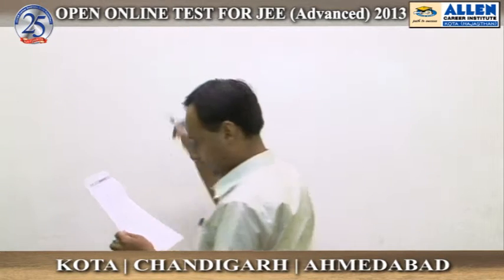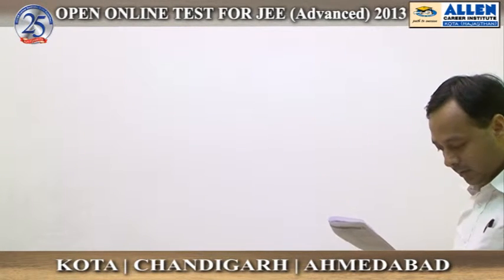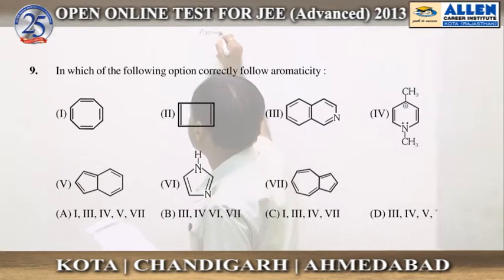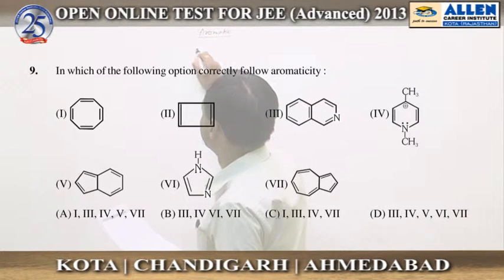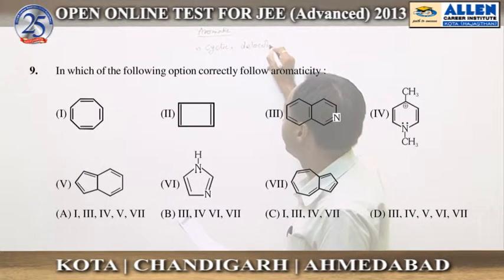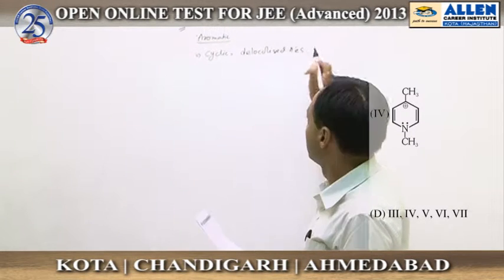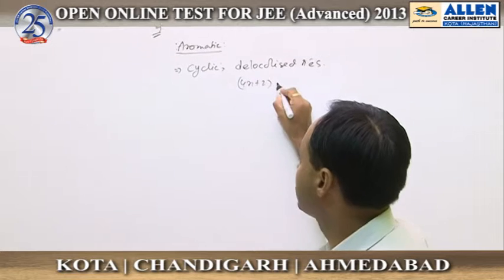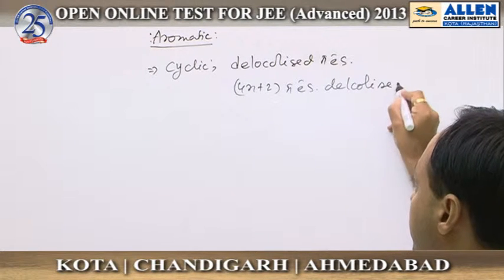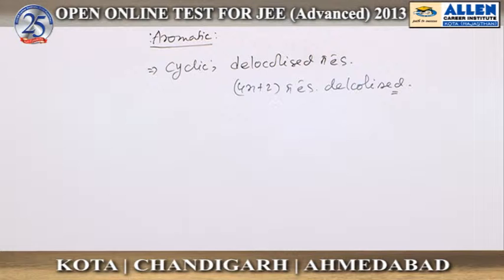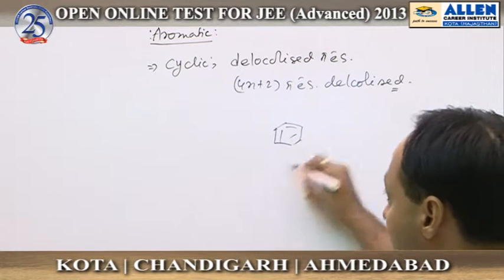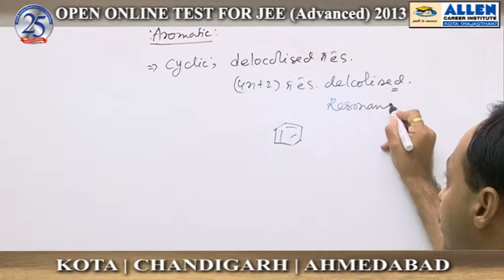Question number nine asks which of the following options correctly follow aromaticity. First, aromatic compounds must be cyclic, have delocalized pi electrons, and follow Hückel's rule, which states there must be 4n+2 pi electrons delocalized. Delocalized electrons means the compound has to undergo resonance in the entire ring.